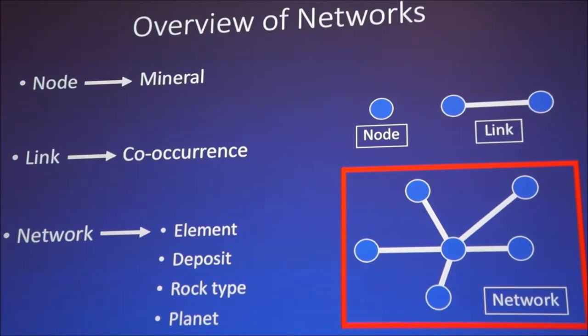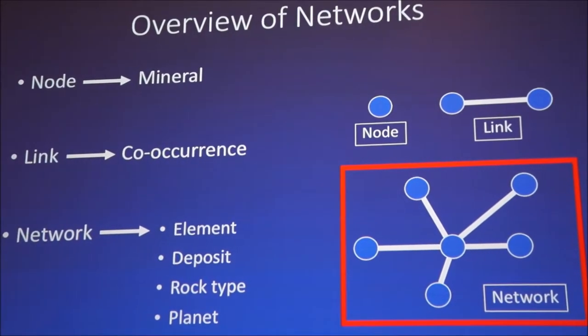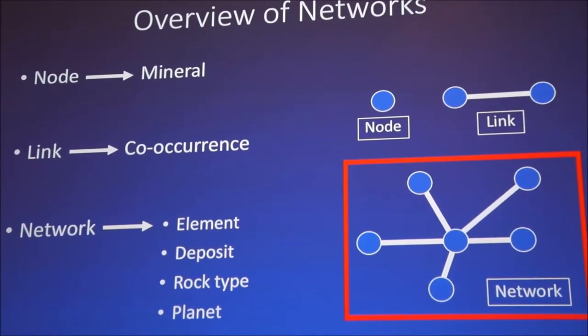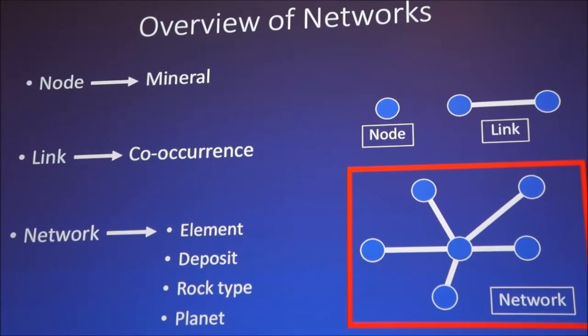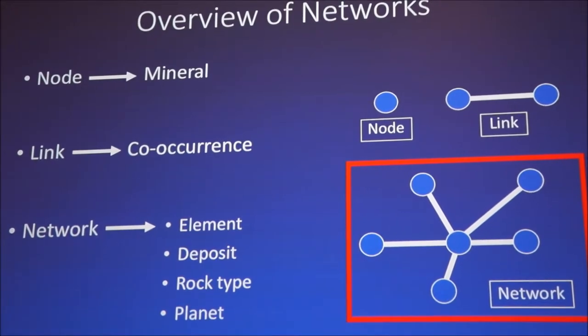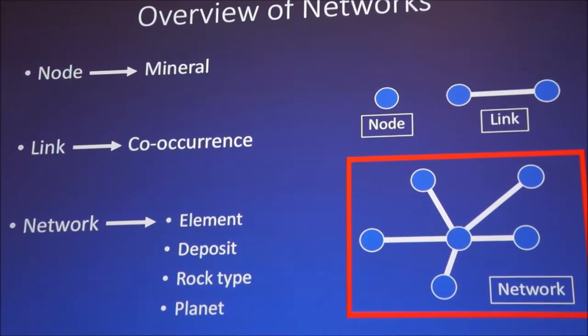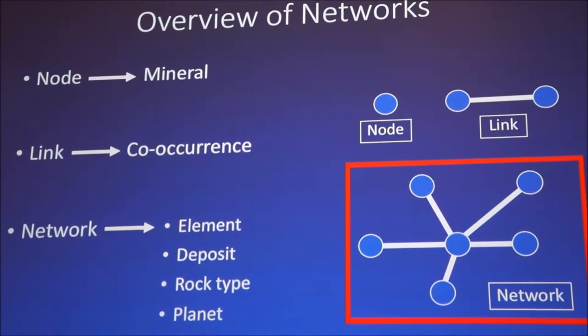We can make a network based on an element, so the carbon mineral network. We could show a network based on deposit type or rock type, or even a planet if you want to use, say, Martian meteorites as a proxy for the bulk Martian material. We can look at it on a planetary scale. A big assumption right now.